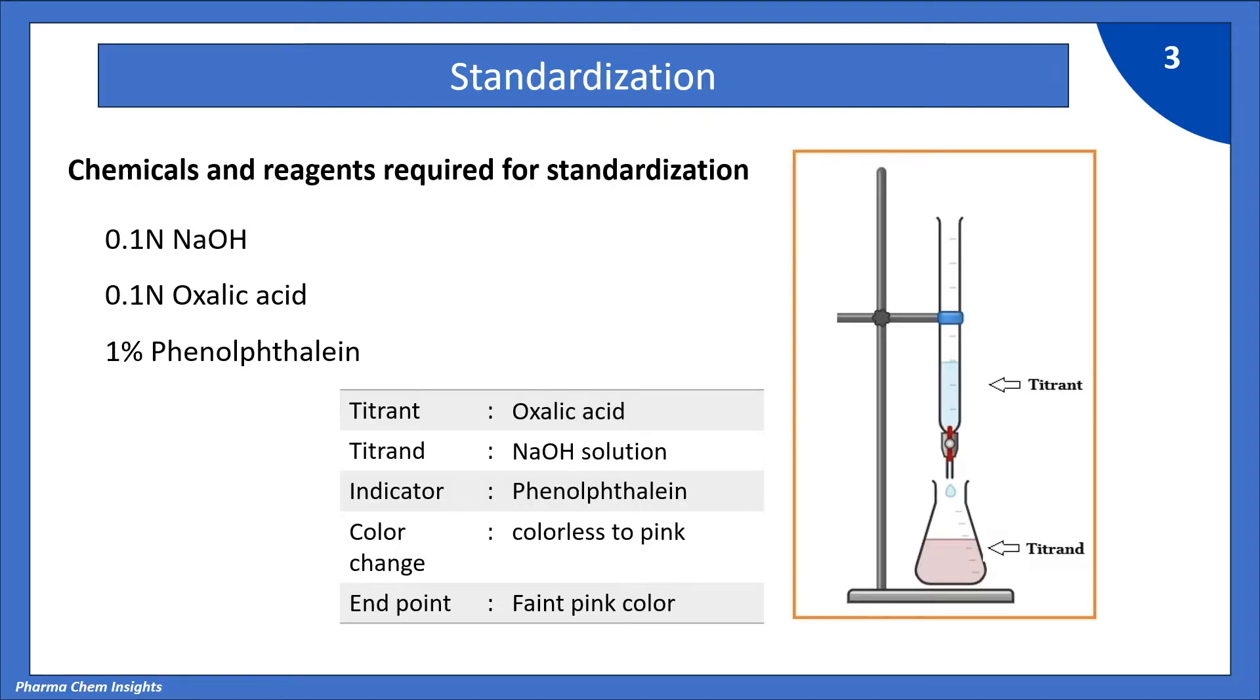So while doing titration, our titrant is oxalic acid, titrate is NaOH solution, indicator is phenolphthalein, the color change we will get is colorless to pink and end point will be faint pink color.